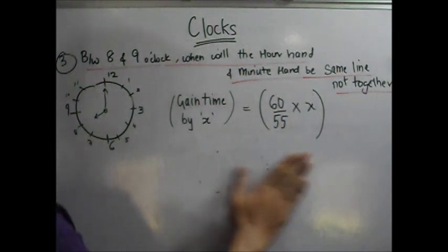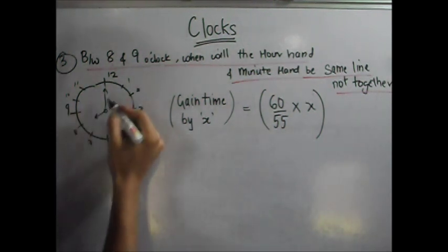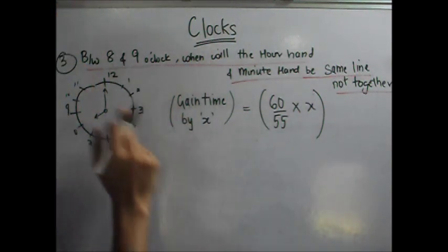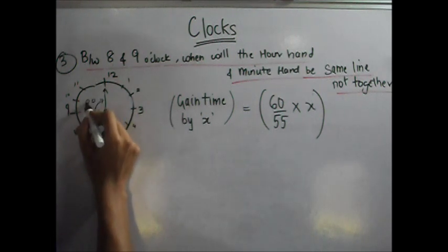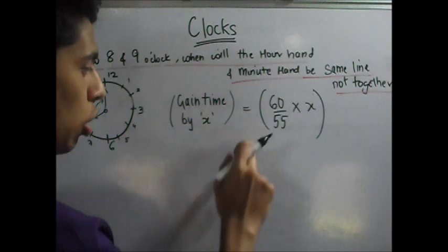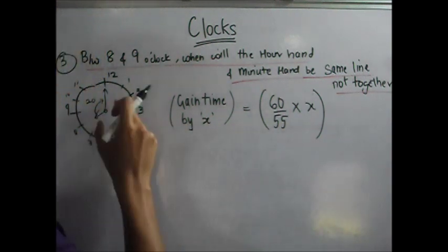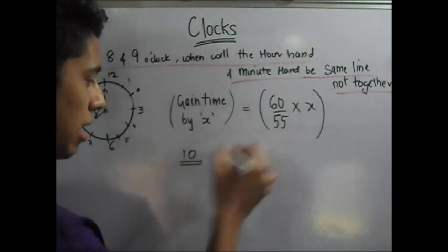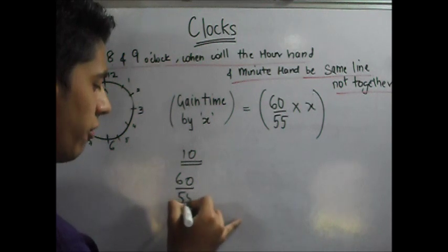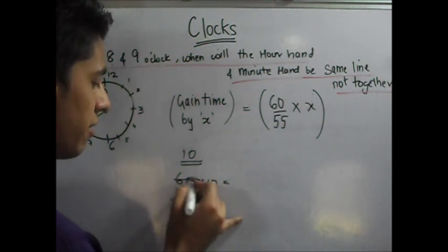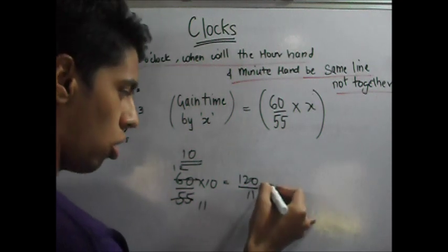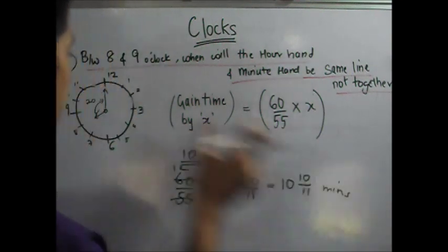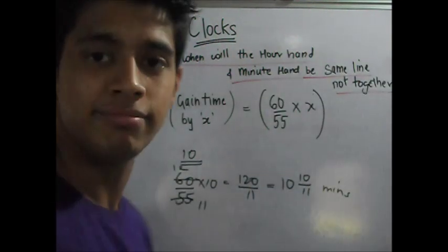Consider 8 o'clock. The hour hand will be at 8 and the minute hand will be at 12. By the shortcut formula, you can finish this in under 10 seconds. The difference here is 20 minutes. We want them in the same line but not together — opposite directions — meaning 30 minutes apart. It already has 20 minutes, so it needs to gain 10 more minutes. Using the shortcut: (60/55) × 10 = 120/11 = 10 and 10/11 minutes past 8. At that time, the hands will be in the same line but not together.